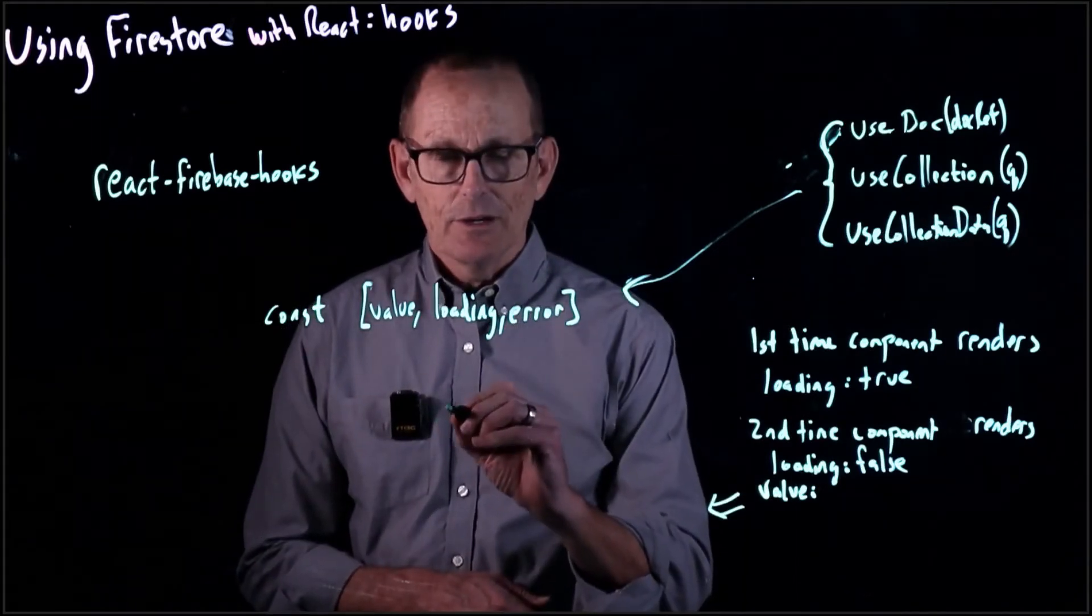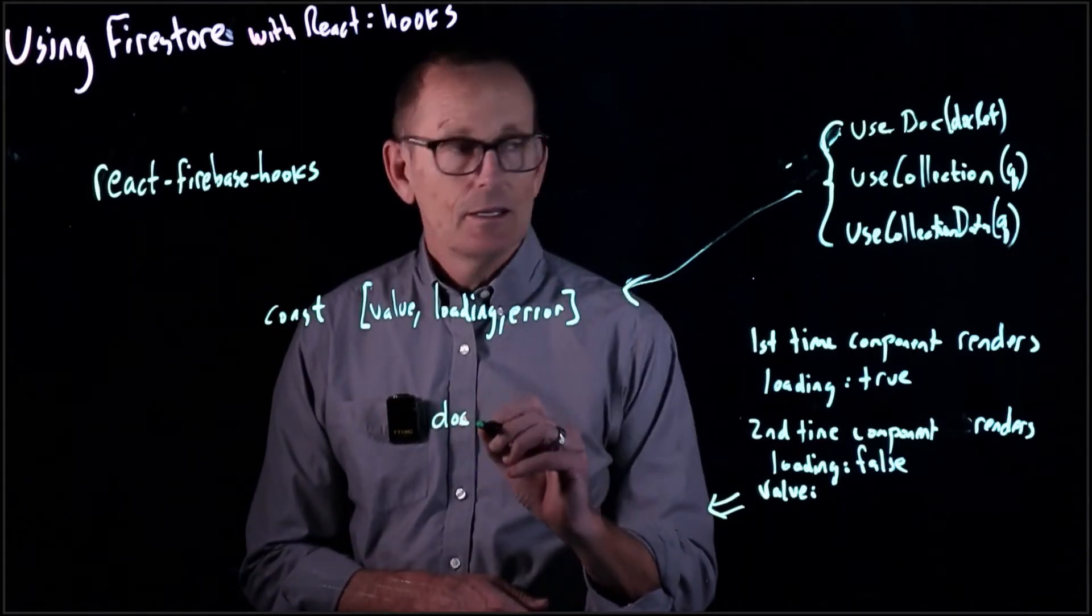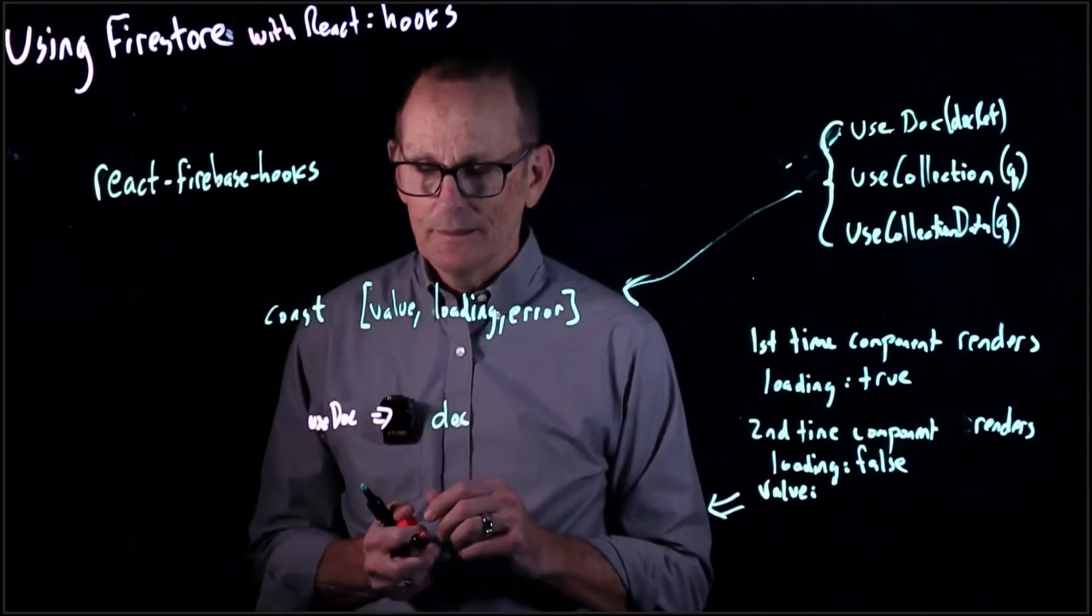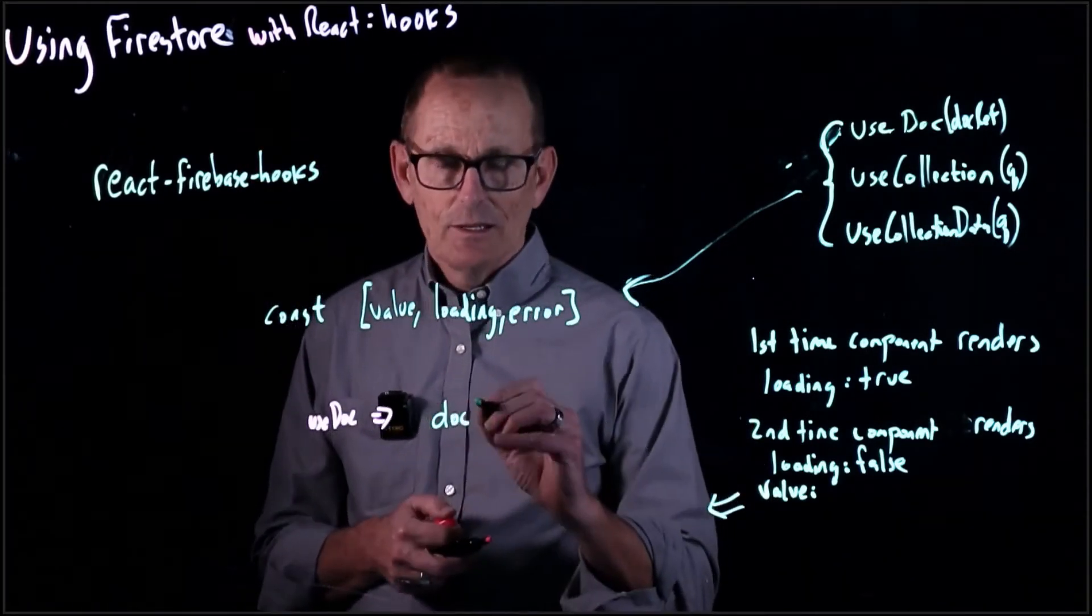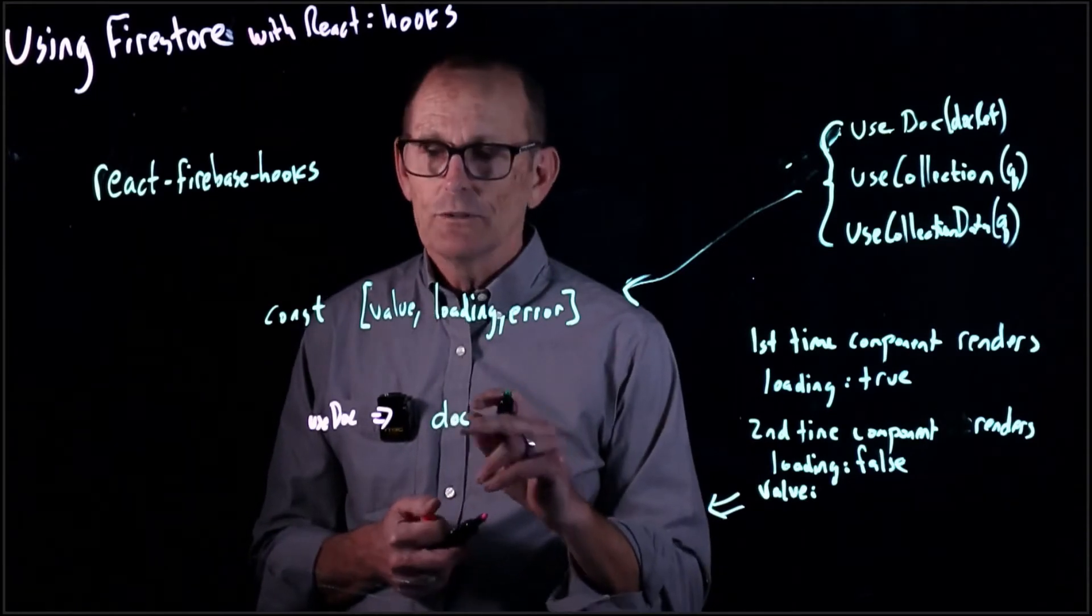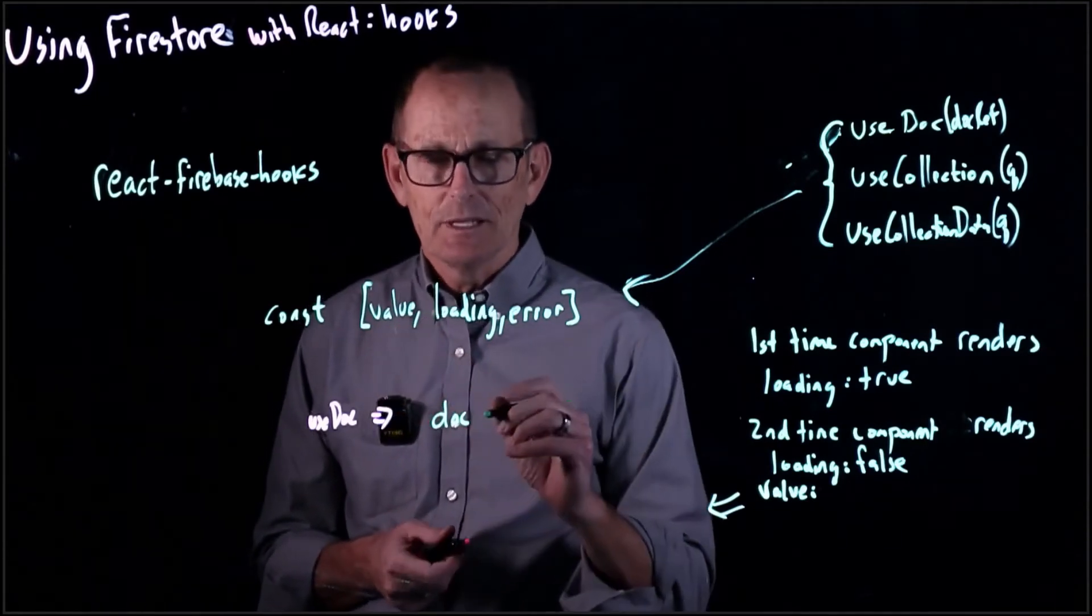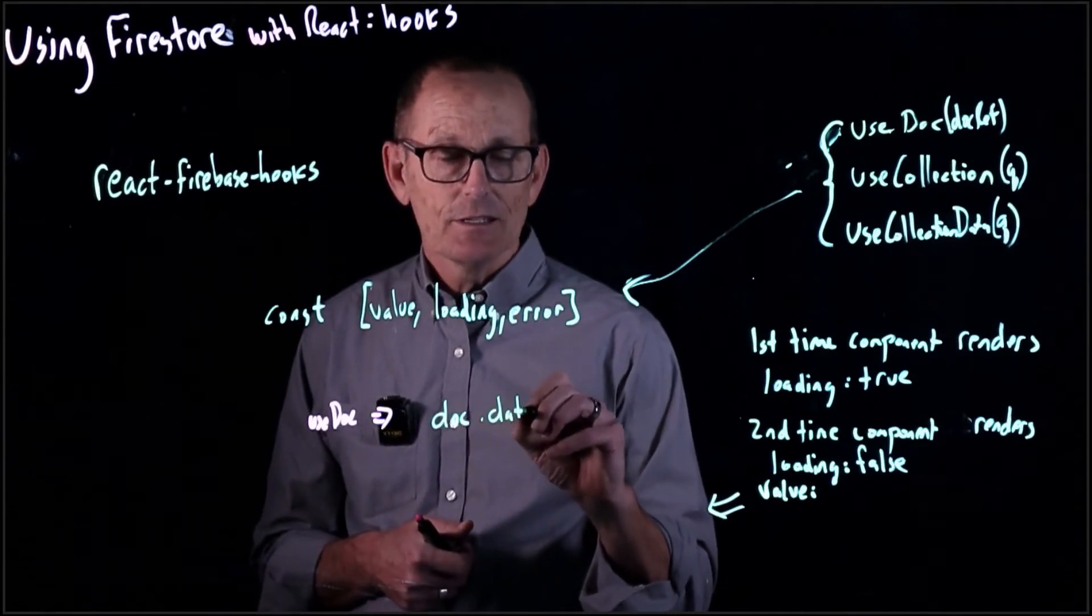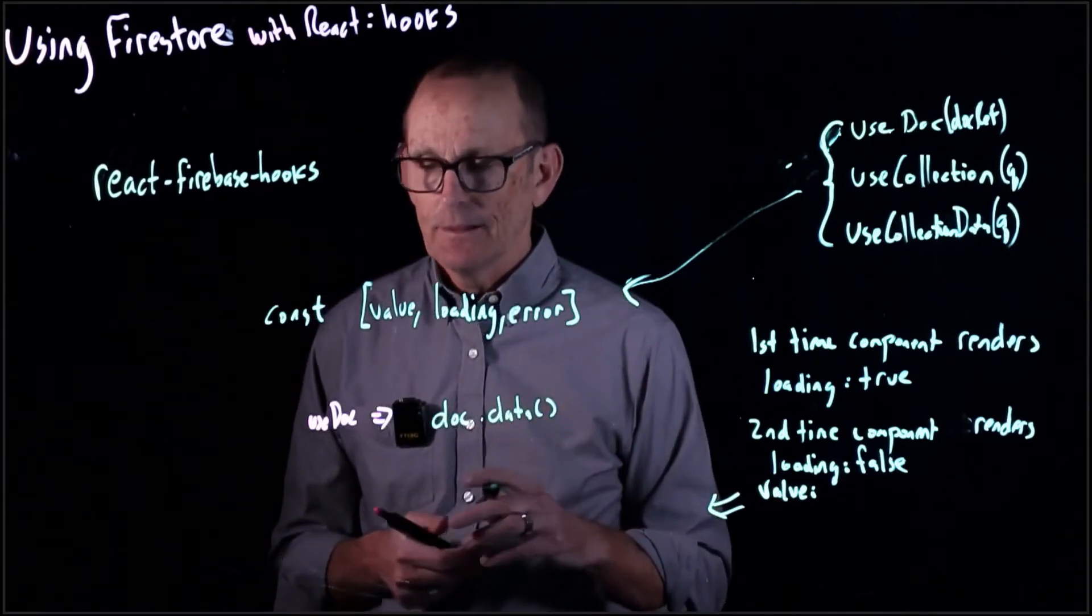Value is going to be either a document. If we use useDoc, we're going to get back a document. And what can we do? Value will be a document. So we can then say doc.data, for instance, to get out its field and do something with that.